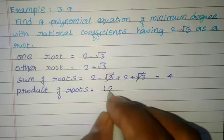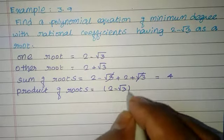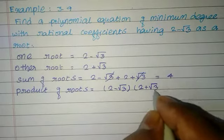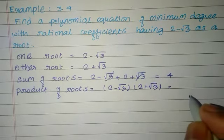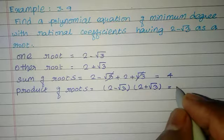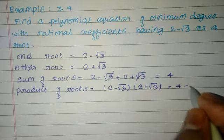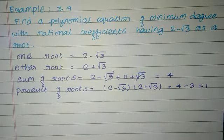Product of roots equals (2 minus root 3) into (2 plus root 3). Using the identity (a minus b)(a plus b) equals a square minus b square: 2 squared minus (root 3) squared equals 4 minus 3, which equals 1.